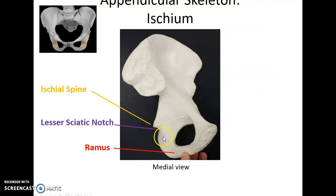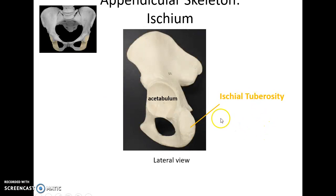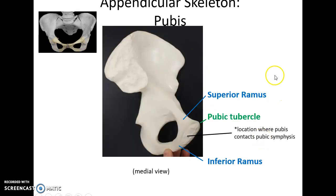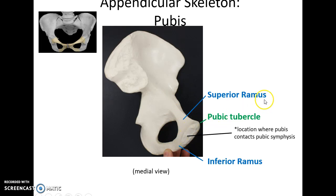Moving down, we have the ischium. The ischium includes the ischial spine sticking out and the lesser sciatic notch. The arm portion that attaches to the pubis is the ramus. Flip it over so you can see the acetabulum — this rough thick patch is the ischial tuberosity. Go to the pubis, the anterior inferior portion. You have the superior ramus articulating with the ilium, the inferior ramus articulating with the ischium, and a point sticking out called the pubic tubercle. This rough area here is where the pubic symphysis cartilaginous joint is formed.